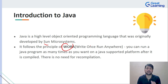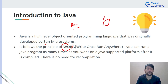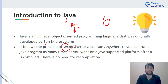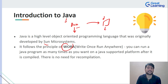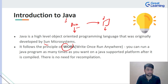What do we mean by WORA? It means you write your code once and compile it. Whenever you run it on a different machine, you take the output of that compilation — which is in the form of bytes, a bytecode — and whenever you take that bytecode and run it on a different machine, you don't have to compile it again. It will simply run. There is no need for recompilation. That is the beauty of this principle: write once, run everywhere, on any Java-supported platform.